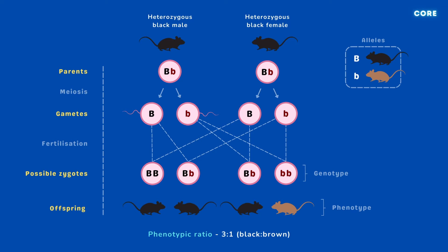In other words, we would expect roughly 75% of offspring to be black, and 25% to be brown.